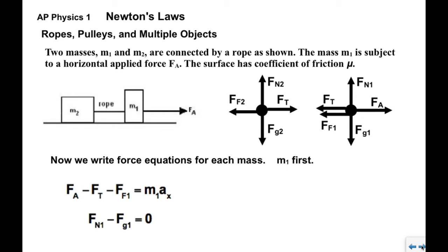Now we write force equations for each mass. To the right is positive, to the left is negative, equals M1. The objects will accelerate to the right. Up and down they don't accelerate at all, so Fn1 minus Fg1 equals zero.